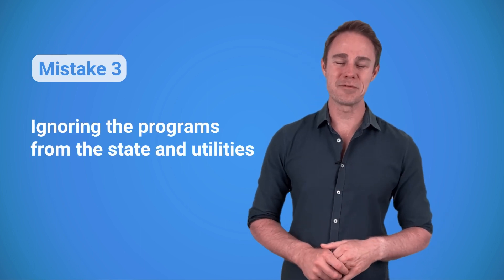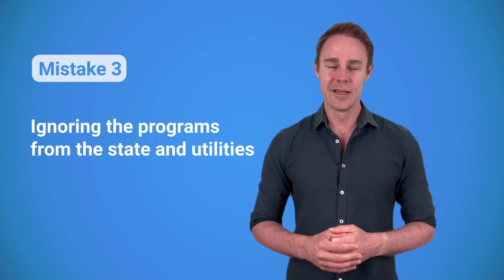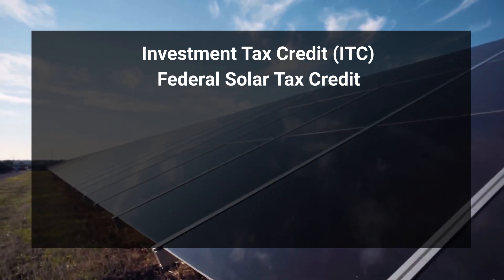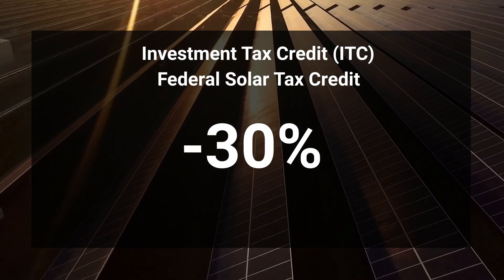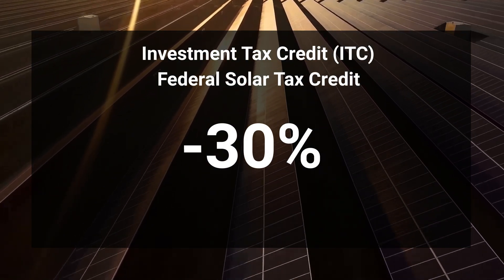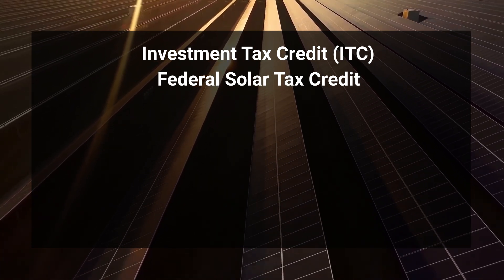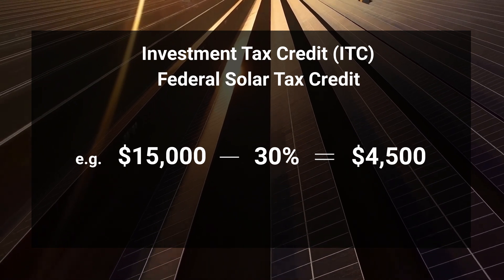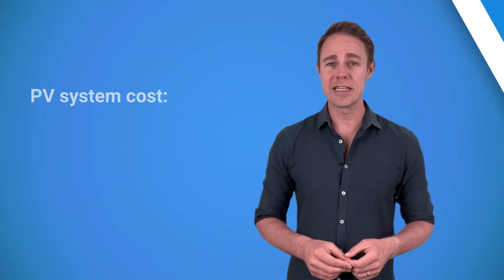Ignoring the programs from the state and utilities. Solar incentives can bring the cost of installation down by thousands of dollars so it really makes sense to try to get them. Solar owners should always make use of federal solar tax credit. It lets you deduct 30% of your installation cost from income taxes. For example if the solar system costs you fifteen thousand dollars you could claim back four and a half thousand dollars. Now the total solar installation costs include inverters, batteries as well as labor and shipping expenses.